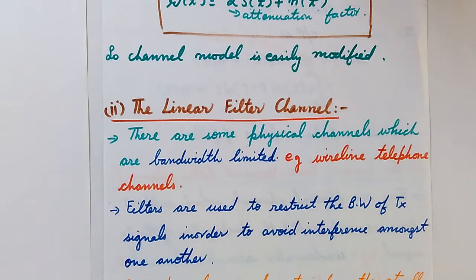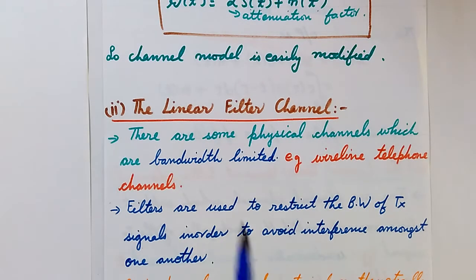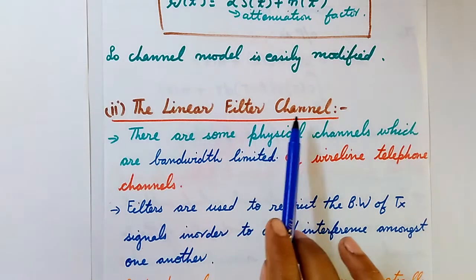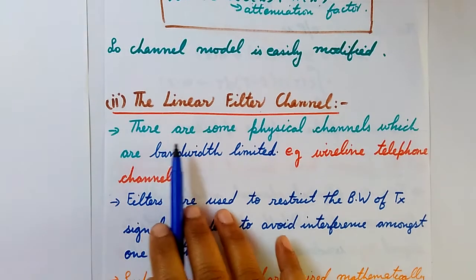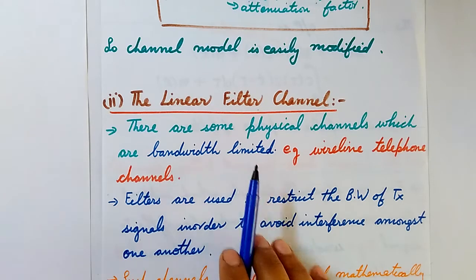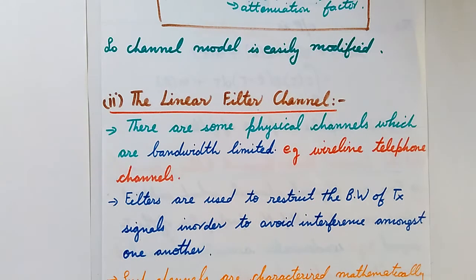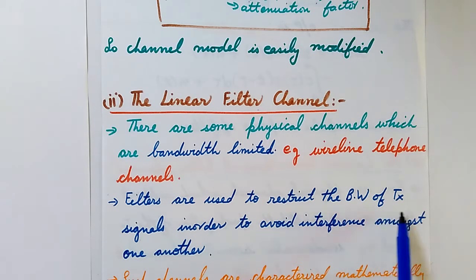The second type is the linear filter channel. As the name suggests, it is linear — meaning there are no higher-order terms — and a filter is also being used. Some physical channels are bandwidth limited, meaning you cannot transmit a signal with a bandwidth higher than prescribed for that particular channel. For example, wireline telephone channels are bandwidth limited. The filters used in these channels restrict the bandwidth of the transmitted signals.